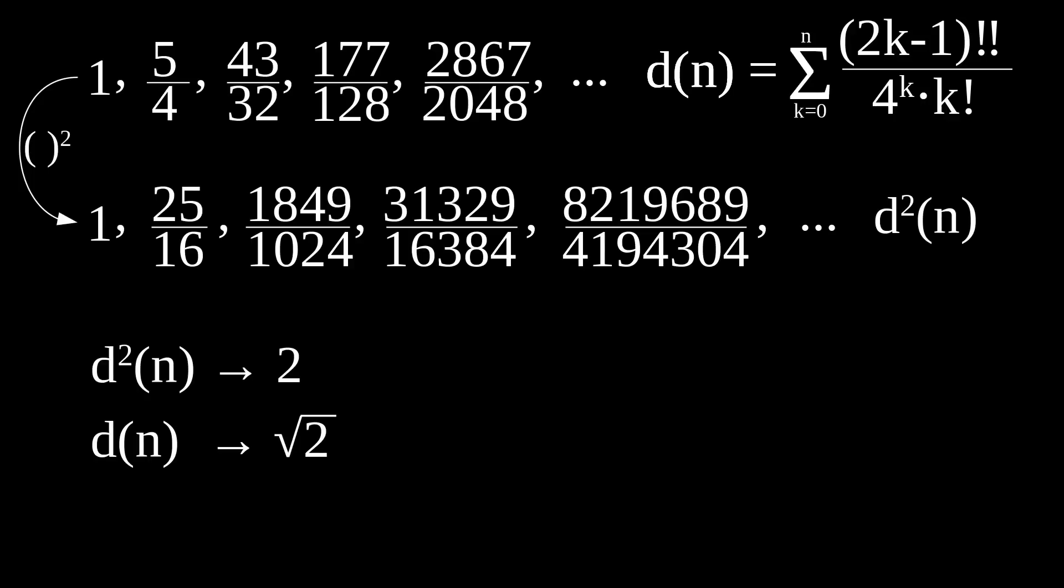But we know because of that rather famous proof by contradiction that no rational number is the square root of 2, meaning in the rational numbers, the Cauchy sequence d does not converge. In fact, if you were to choose an arbitrary Cauchy sequence, it will, in some sense, almost certainly not converge to a rational number. There are simpler sequences than d for which this is easy to show—I just thought the square root of 2 sequence was kinda neat.